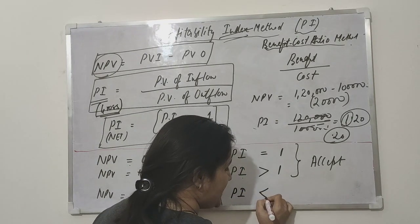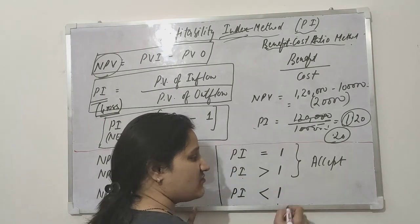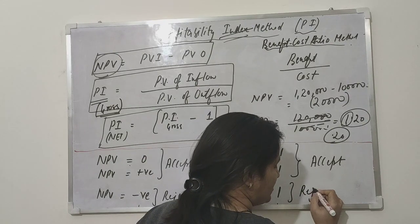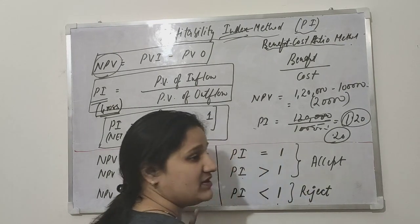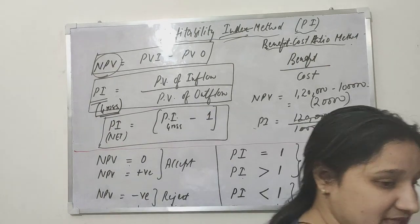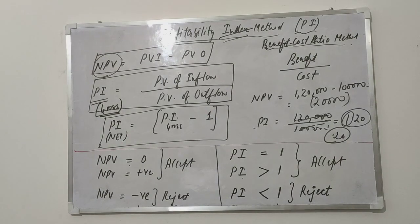Similarly, if PI is negative, means less than one, we will reject the project. This will be the case to calculate profitability index.